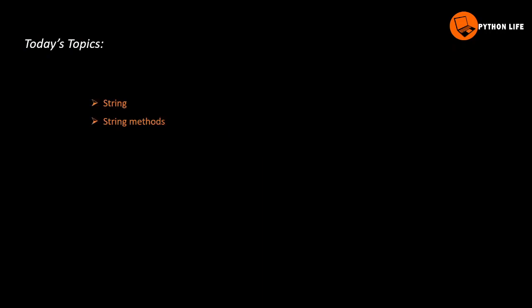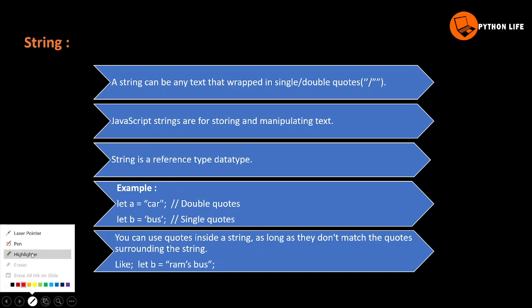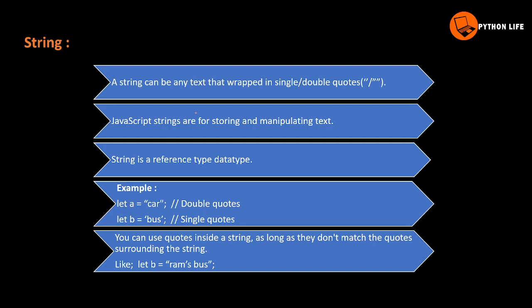We are going to talk about strings. A string is a collection of similar data types — specifically characters. A string can be any text that is wrapped in single or double quotes. JavaScript strings are for storing and manipulating text. You can use text to store and access it.